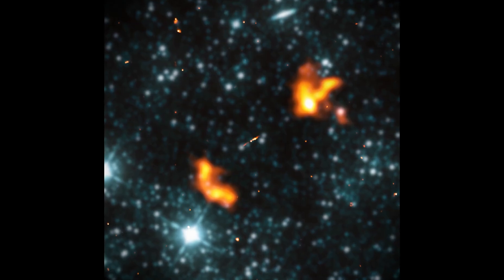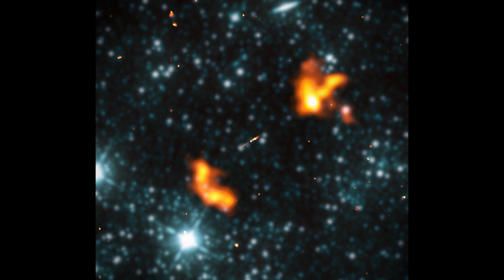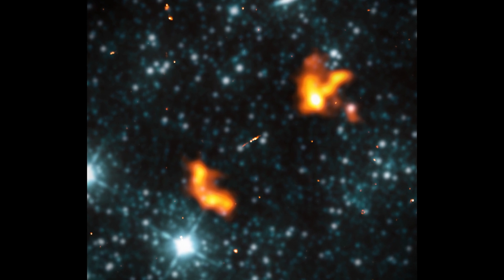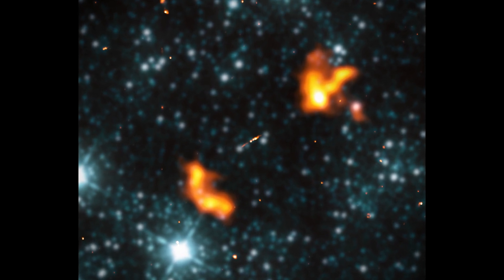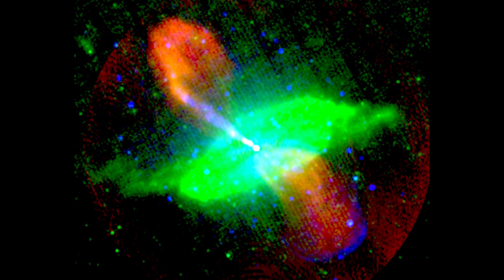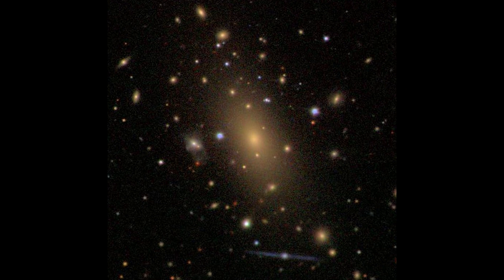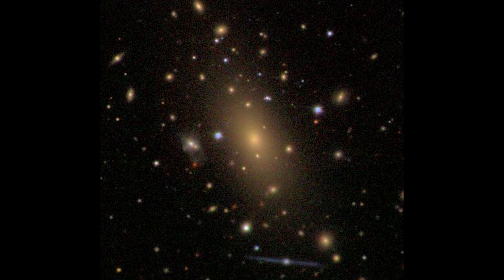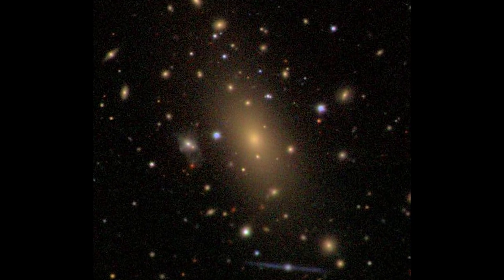Now, I already know that some of you are going to say that the Alcyonius galaxy is technically the largest at 16.3 million light years across, but seeing as it's a radio galaxy, I'm not going to count it.